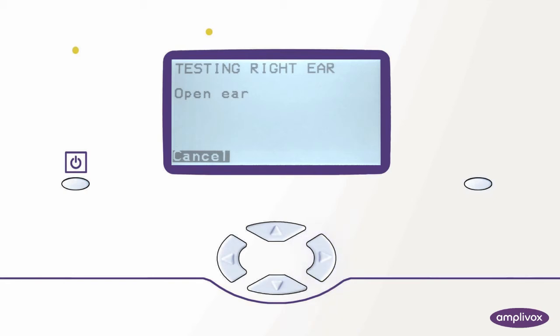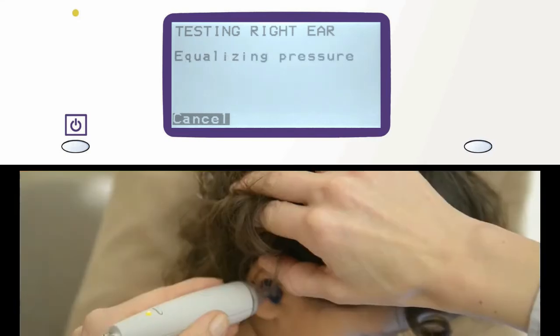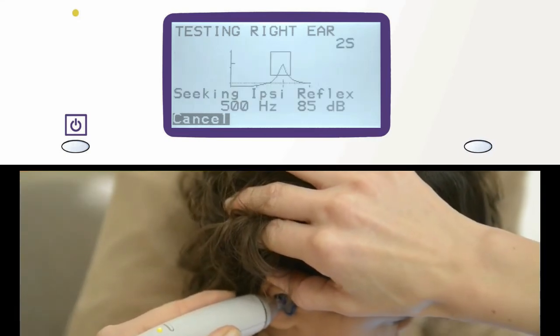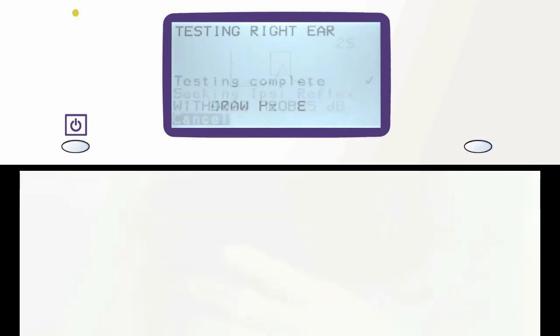Our 302 will now guide us through the test process. Insert the probe into the patient's ear and hold the probe in place while the measurement is ongoing. On the display we can follow the progress of the test sequence.